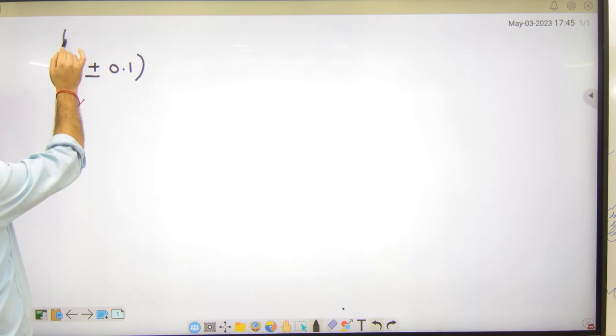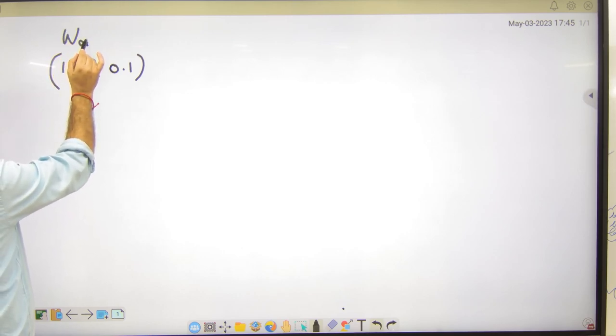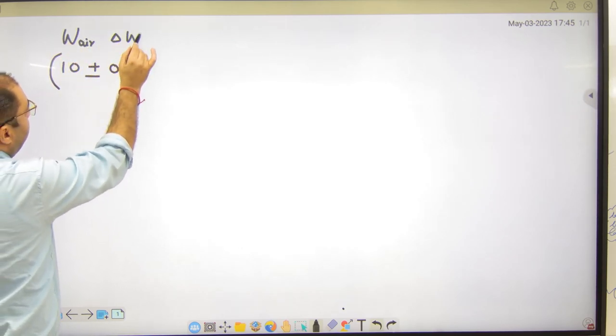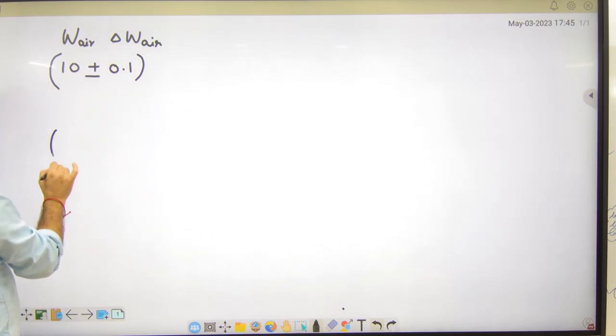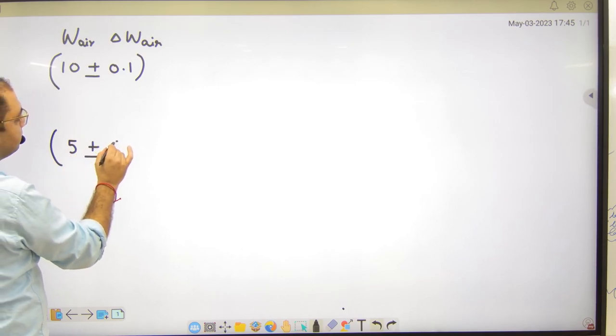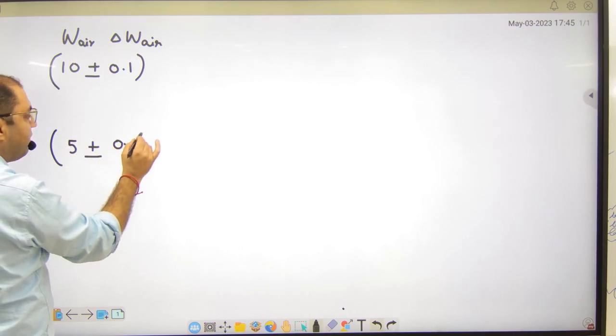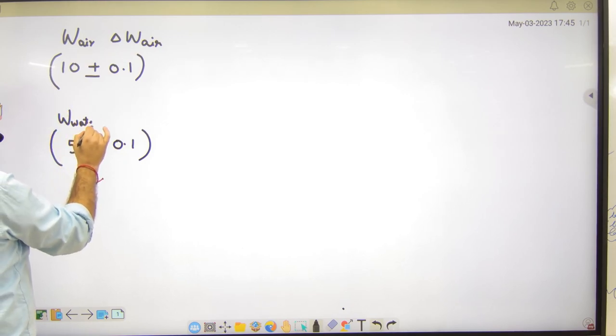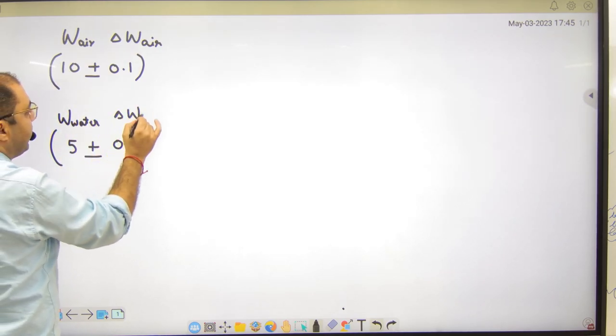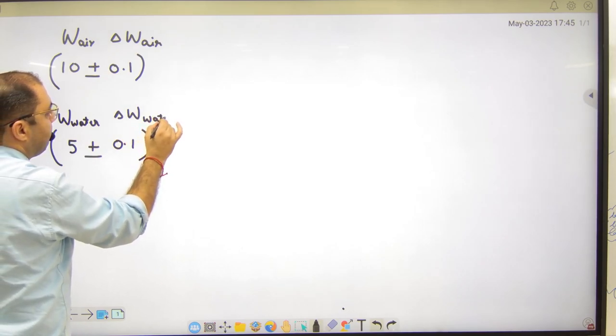10 plus minus 0.1 newton hai, aur water mein 5 plus minus 0.1 newton hai, to percentage relative density mein kya ho ga? Ya ho ko calculate karna hai. To mujhe ek baar batana ki air mein weight kiya 10 plus minus kitna 0.1 newton hai. Thik hai? To ye aisa likh leta ho. W air aur ye kya hai delta weight in air. Water mein bolna kya weight hai?